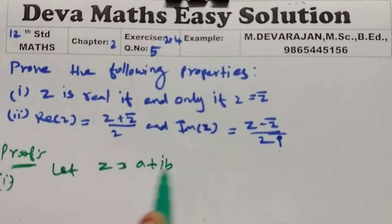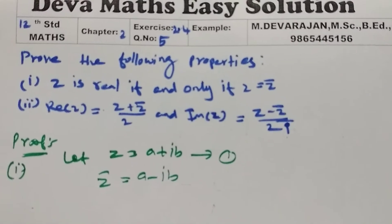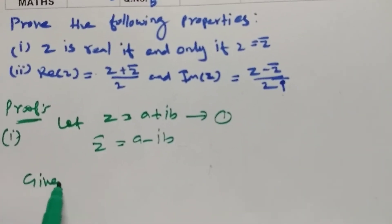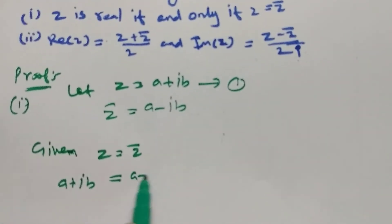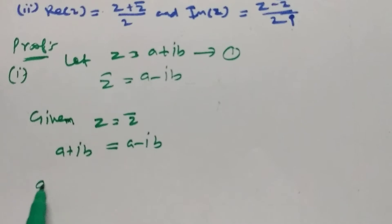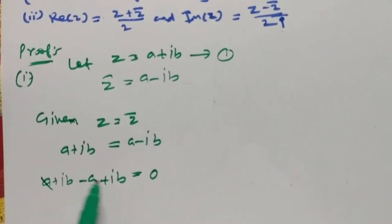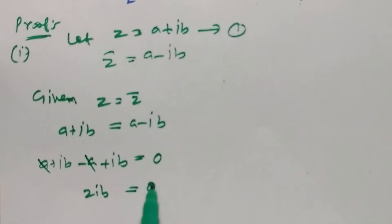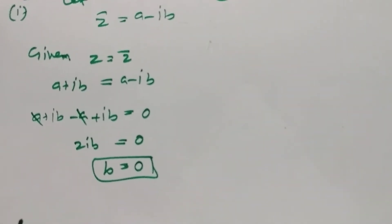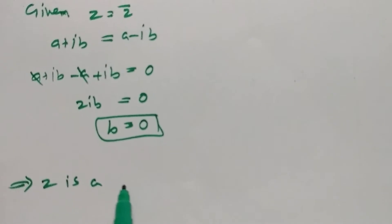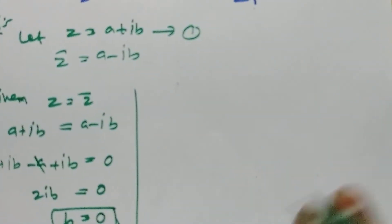Let z equal to a plus ib, so z-bar is equal to a minus ib. Given z equals z-bar, so a plus ib equals a minus ib. Therefore a plus ib minus (a minus ib) equals 0, giving 2ib equals 0, so b equals 0. Therefore z is a real number.